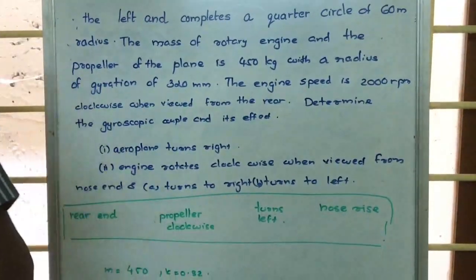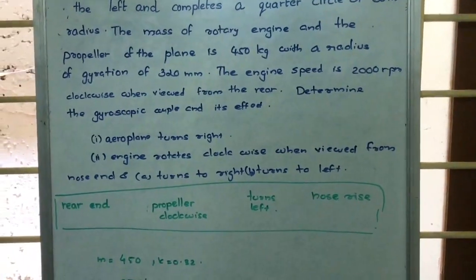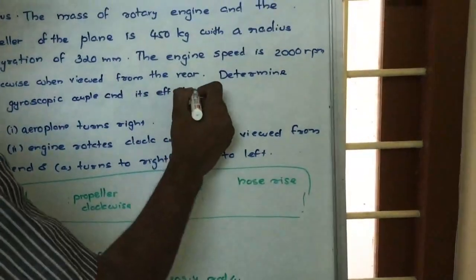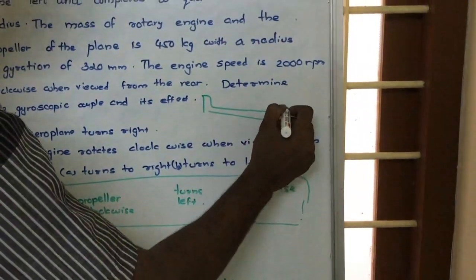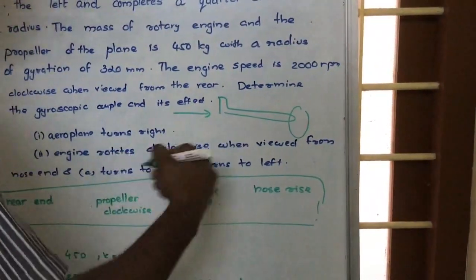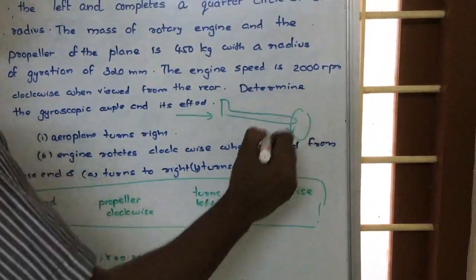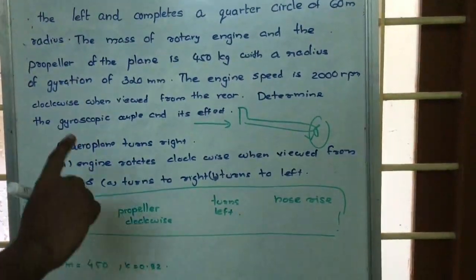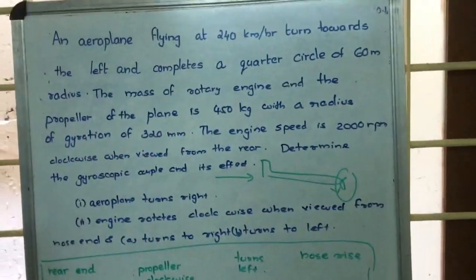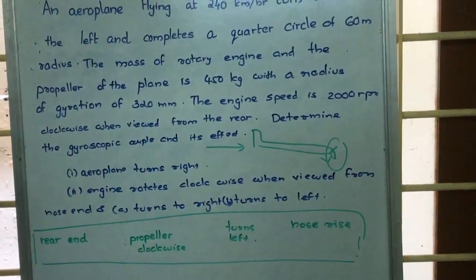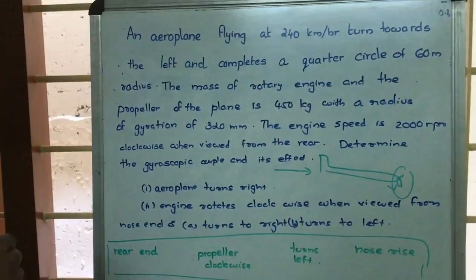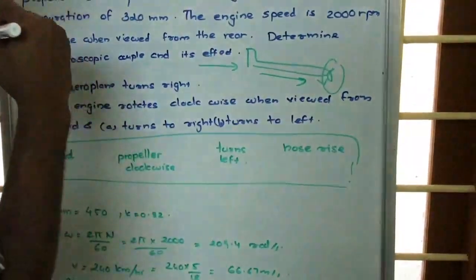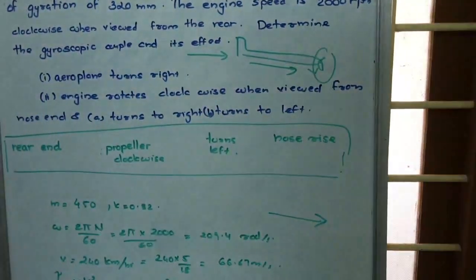Now, let's determine the gyroscopic effect. Representing this figure, this is the aeroplane and the propeller is rotating. We are looking from the rear end, and when looking from the rear end, it is rotating in the clockwise direction. So if we are representing this angular velocity — when it is rotating in the clockwise direction, the angular velocity's direction will be towards the plane of rotation, that means towards the propeller. So angular velocity is represented pointing in that direction.